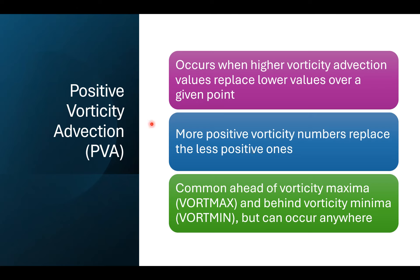When we talk about positive vorticity advection — PVA — this occurs when higher vorticity advection values are going to replace lower values over a given point at a given location. There are more positive vorticity numbers with PVA replacing the less positive ones. PVA is common ahead of vorticity maximums and behind vorticity minimums, but can occur anywhere. We're looking at the 500 millibar chart — generally 18,000 feet above the ground — and associating these areas of PVA and NVA with shortwave troughs and shortwave ridges at 500 millibars.